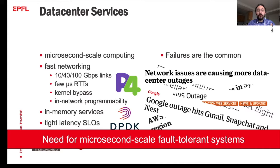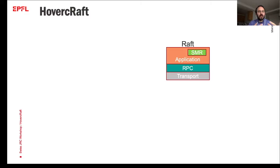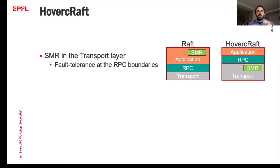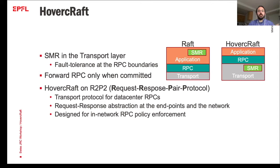The common design pattern for fault-tolerant applications suggests using a state machine replication library embedded inside the application, meaning every application that needs to be fault-tolerant has to take special care. Hovercraft follows a different design: we incorporate state machine replication inside the transport layer and provide fault tolerance at the RPC boundaries. So Hovercraft forwards an RPC to the application layer only when that RPC has been committed. To do that we depend on a transport layer that exposes RPC semantics, and for that we used R2P2.